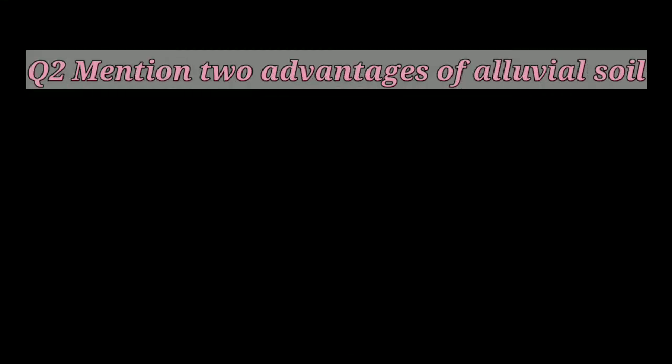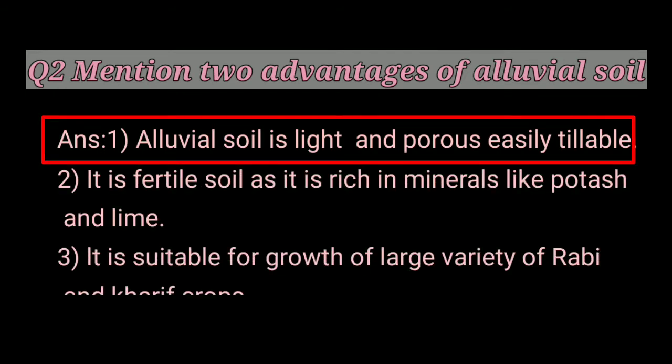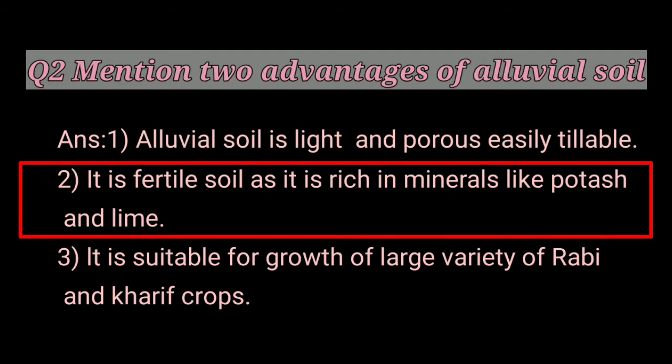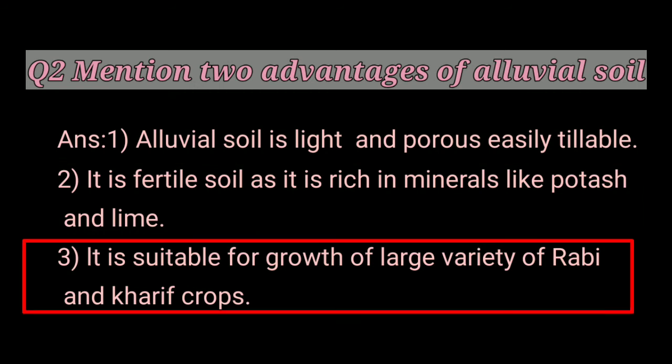Next question: Mention two advantages of alluvial soil. Alluvial soil is light and porous, and easily tillable. It is fertile as it is rich in minerals like potassium and lime. It is suitable for the growth of a large variety of Rabi and Kharif crops.